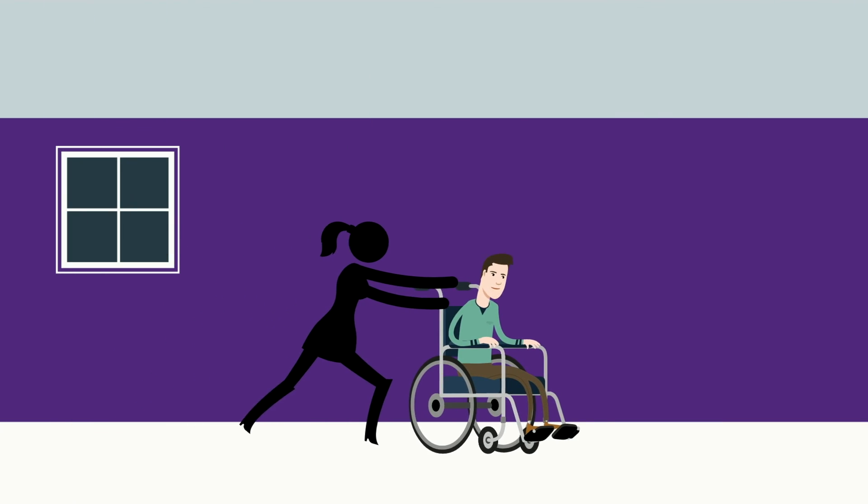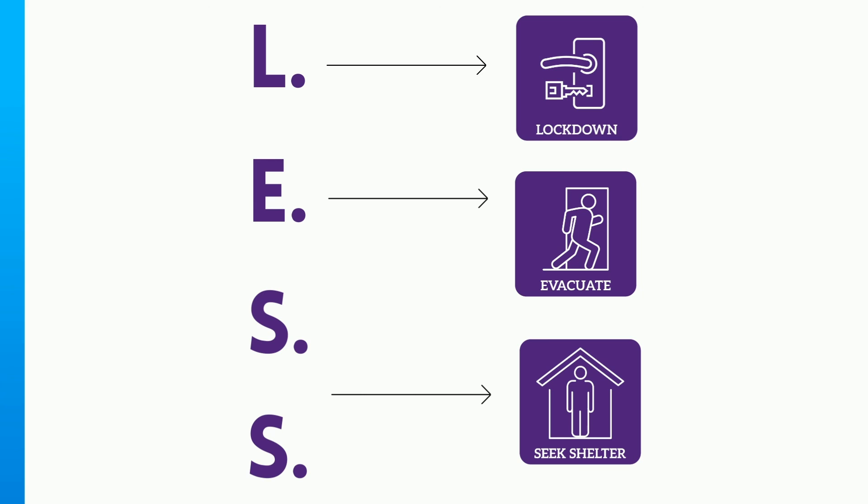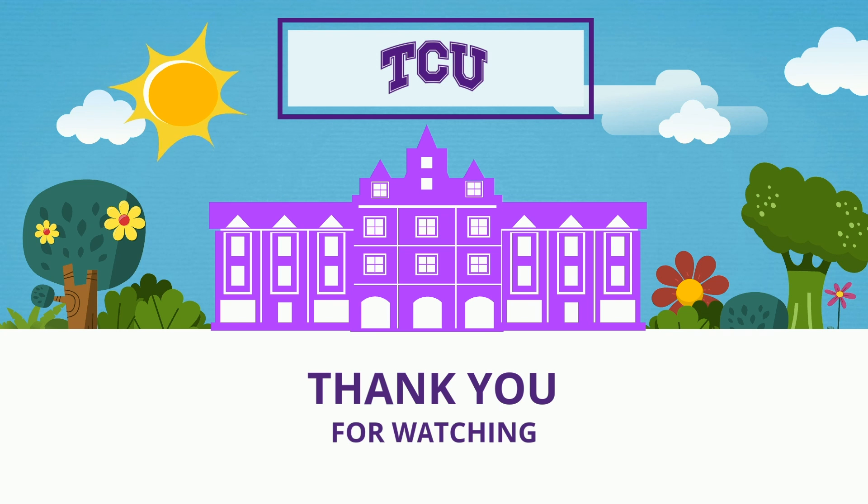If you are able, help others who need help getting to the seek shelter location. Please keep telephone lines free for emergency responders. Do not call 911 for information. Remember, the three emergency responses we follow at TCU go by the acronym LESS is more. L stands for lockdown. E stands for evacuation. And SS stands for seek shelter. If you remember this acronym and the associated protocol, you will be prepared at TCU regardless of the emergency situation. TCU will always do its best to ensure a safe and secure campus. And you can help us by staying informed, educated, and alert. For more information about less is more, visit the public safety website at www.publicsafety.tcu.edu.